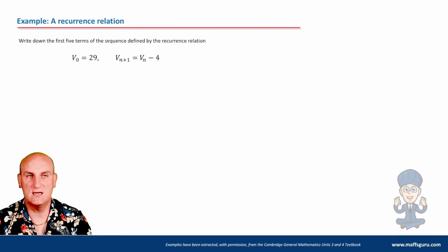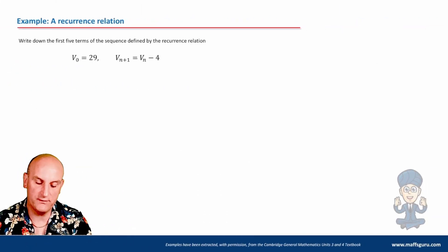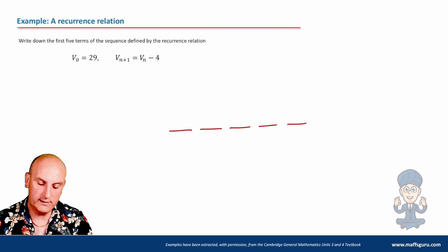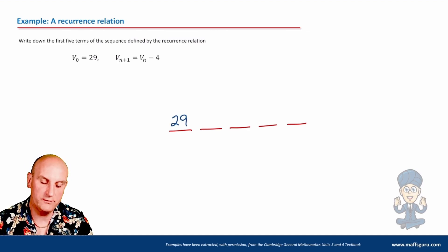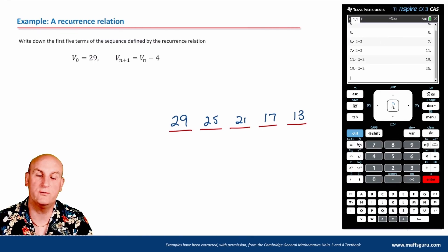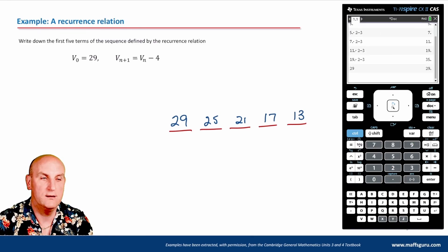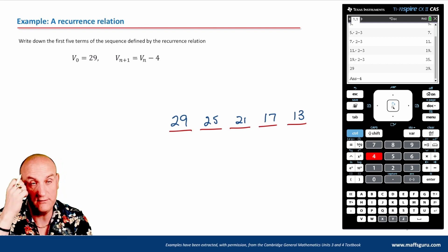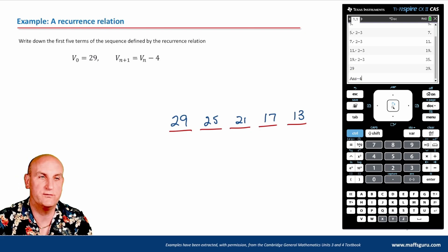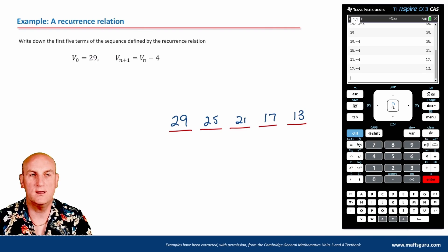Here's an example of a recurrence relation: write down the first 5 terms. Start with 29 because V₀ is 29. What do I have to do? Take my current term and subtract 4. So subtract 4 gives me 25, 21, 17, and 13. I could do this on my calculator to check — type 29, hit enter, then ANS minus 4 and keep hitting enter. And there I've got my sequence.